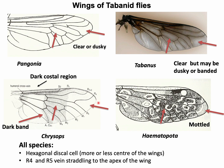Other than these common characteristics, the wings of Pangonia have a clear or dusky band. A dark costal region and dark band are present in the wings of Chrysops. The wings of Tabanus are either clear or dusky, and mottled wing is the distinctive feature of the genus Haematopota.